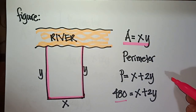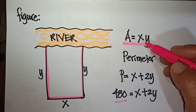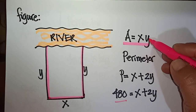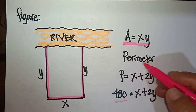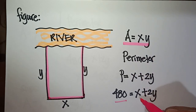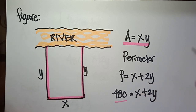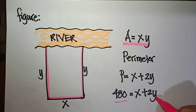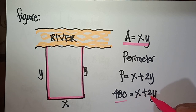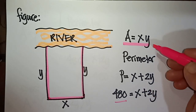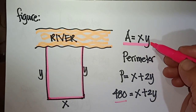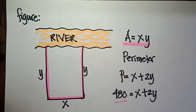Since the area formula has two variables, x and y, we use the perimeter formula to express x in terms of y. It is simpler to express x in terms of y so that the area function has only one variable.